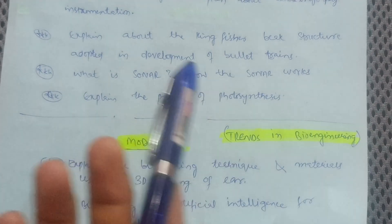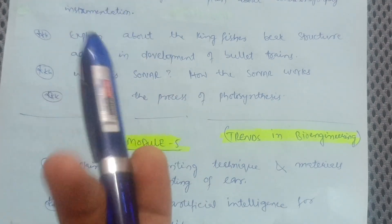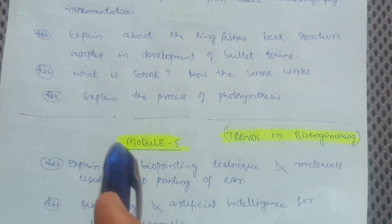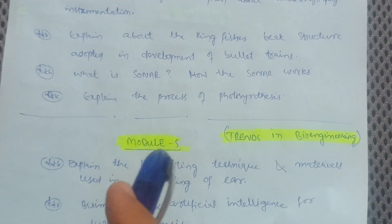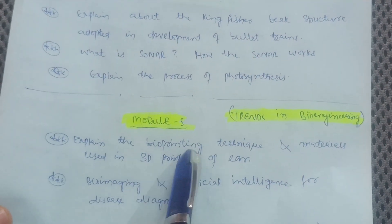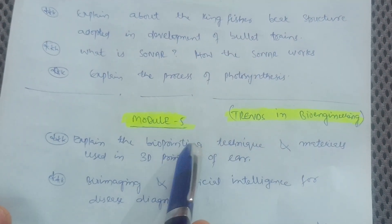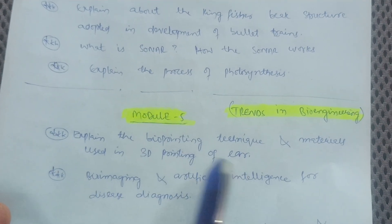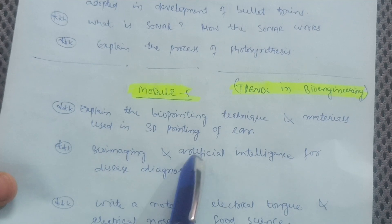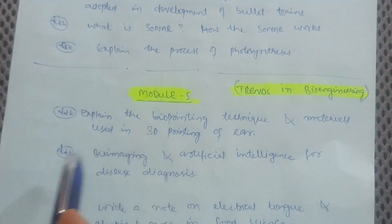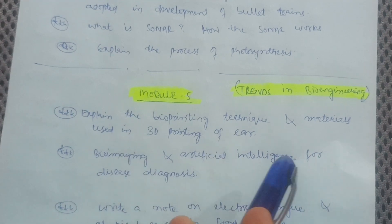You should write it down in the A4 sheet. If you are able to give importance to the questions and write them down, you can automatically make separate notes for this particular subject, Biology for Engineers. Explain the bioprinting technique and materials used in 3D printing of ear. Sometimes bioimaging and artificial intelligence for disease diagnosis questions will be like discuss bioimaging and artificial intelligence for disease diagnosis.